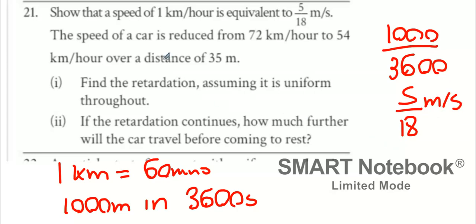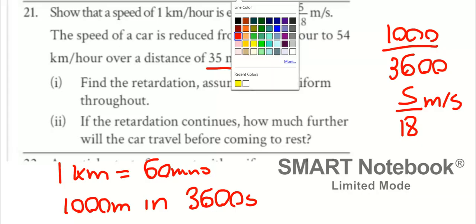The speed of a car is reduced from 72 to 54 kilometers an hour in a distance of 35 meters. Find the deceleration or retardation, assume it's uniform. Uniform means it's the same acceleration. So I'm going to multiply 72 by 5 over 18 to turn it into meters per second.